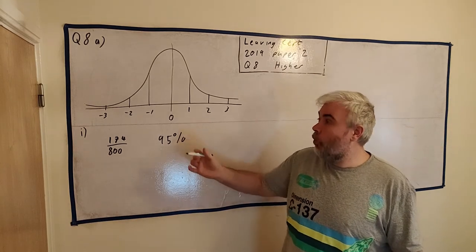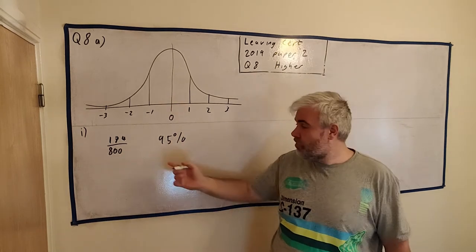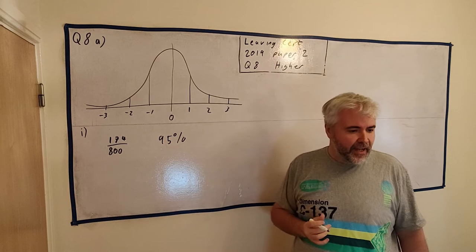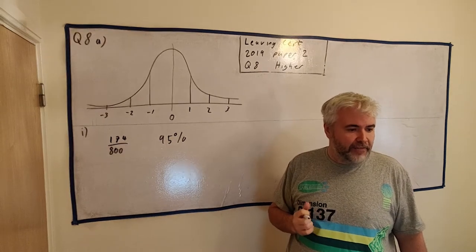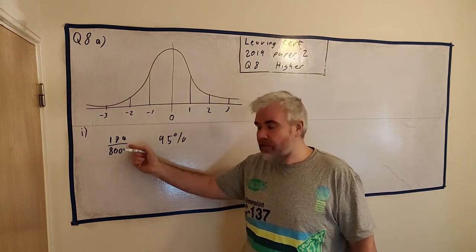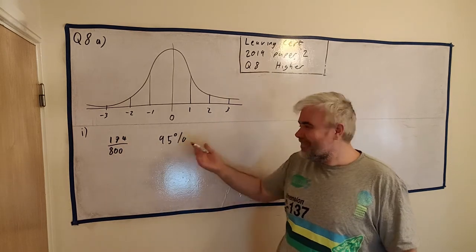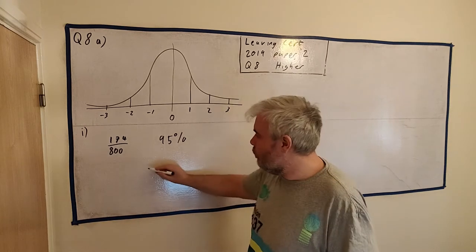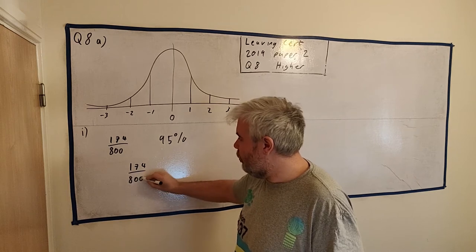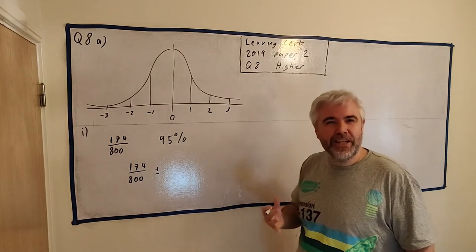Okay, so part A1. Here's the relevant information from the question: there's 174 cars out of 800 cars, and it's about the age of them. They ask us to find the 95% confidence interval for the proportion of new cars. So the proportion of new cars is 174 over 800. What we're looking for is 174 divided by 800 - this number - plus or minus something, plus or minus a confidence interval.